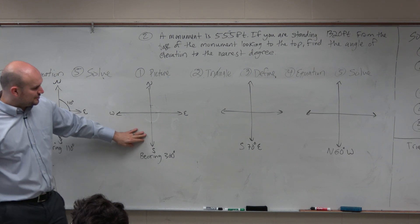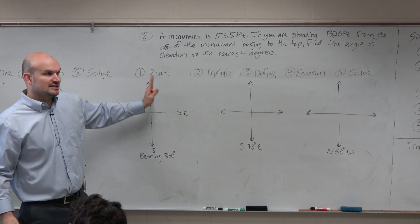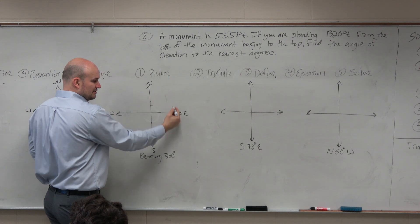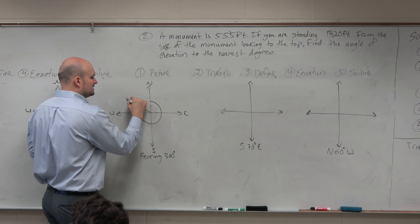So then if I want to do 300 degrees, well, we know all the way around would be 360. So that's going to be 60 degrees short. So what I would do is I'd start again due north, I'd go in the positive direction. And then 60 degrees short would be something like this.